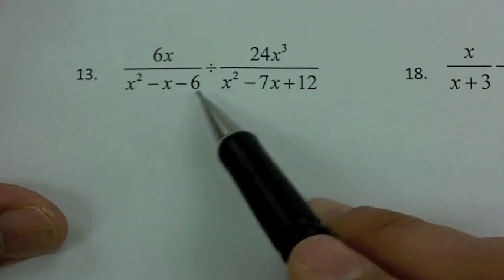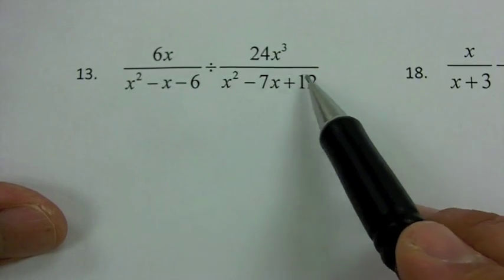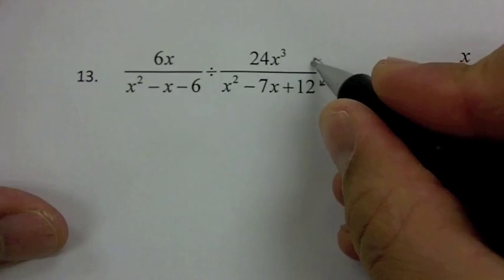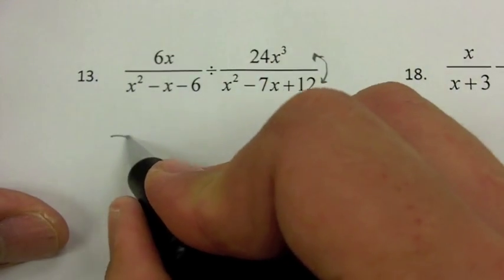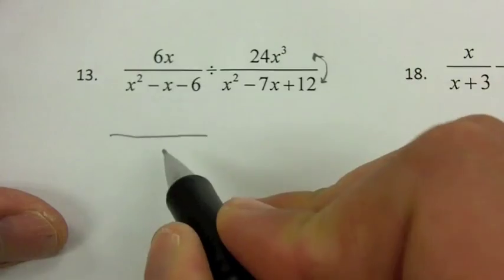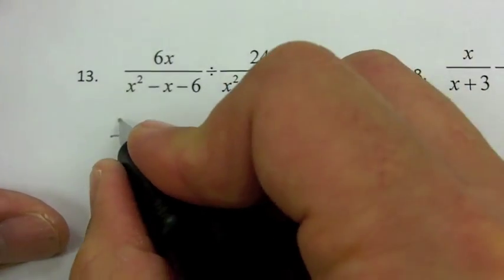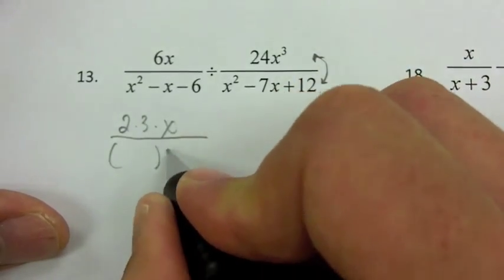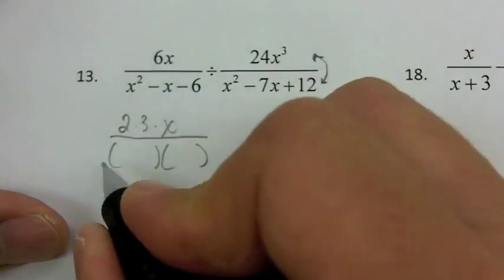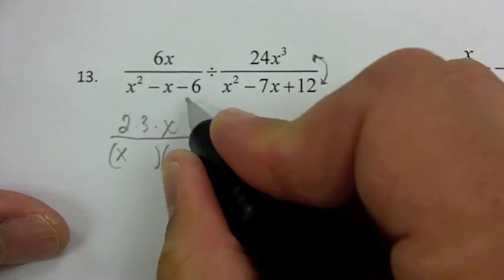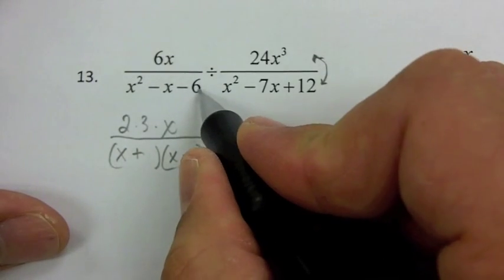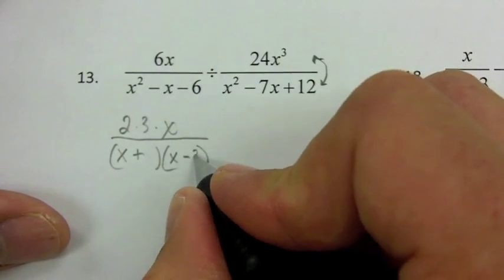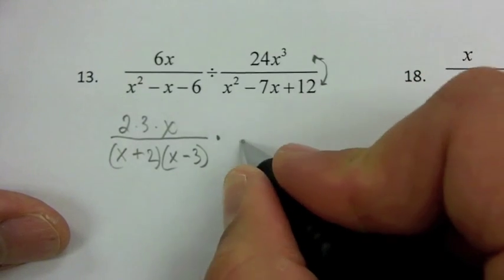Question 13, I'm asked to do division. I want to change this to multiplication first, which means I flip the second fraction. So the first fraction stays as it is — I'll factor it out. 6x factors as 2 times 3 times x. The denominator factors into two binomials: x and x with a plus and a minus, multiplying to give me negative 6 and adding to give me negative 1 — that's negative 3 and positive 2. Then I change to multiplication.